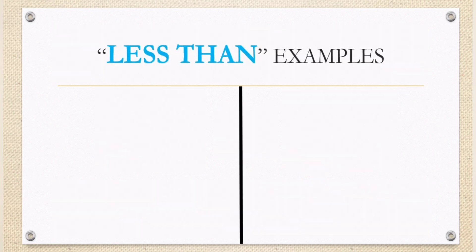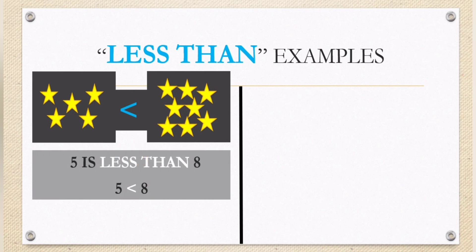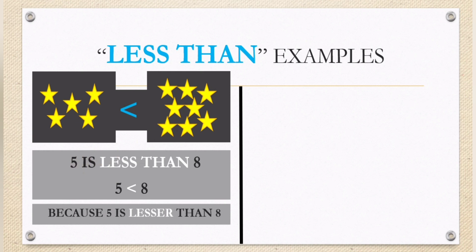Less than examples. There are one, two, three, four, five stars inside the first box. While in the second box there are one, two, three, four, five, six, seven, eight. So if we are going to read it: five is less than eight. Why? Because five is a lesser number compared to eight.